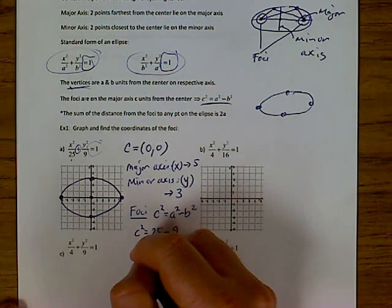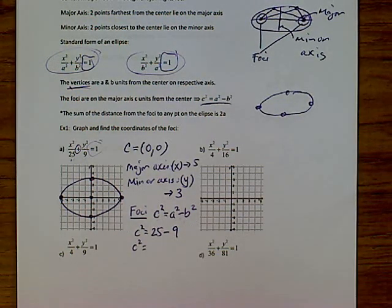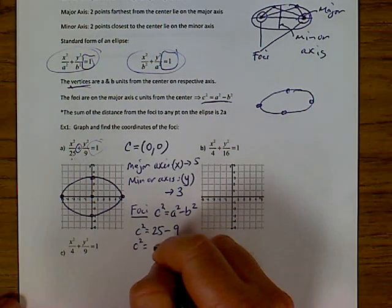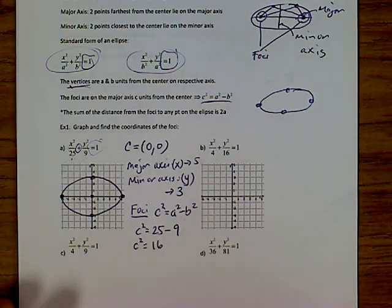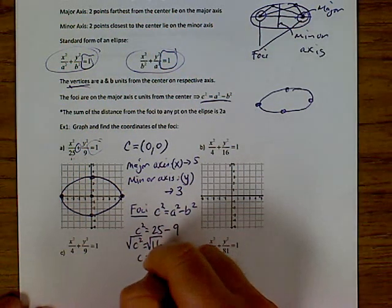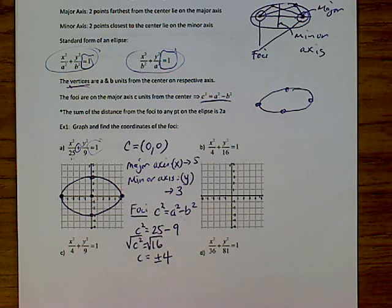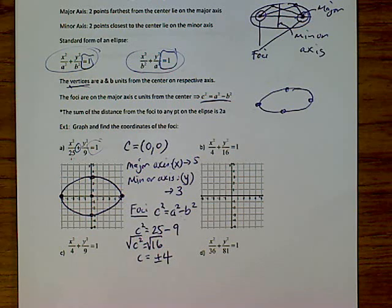So c² is going to equal 25 minus 9, which is 16. Square root both sides and c equals plus or minus 4. When you square root like that it's plus or minus 4 — and that's for finding where the foci are going to be.